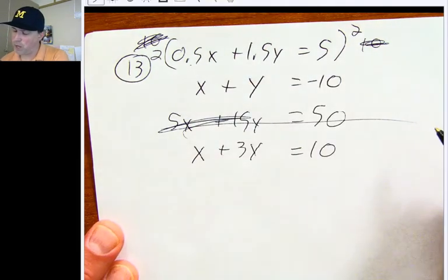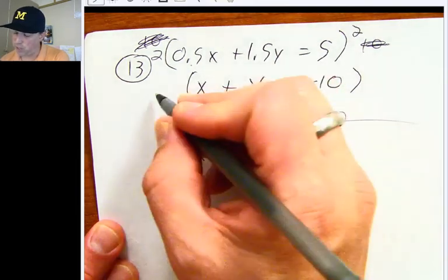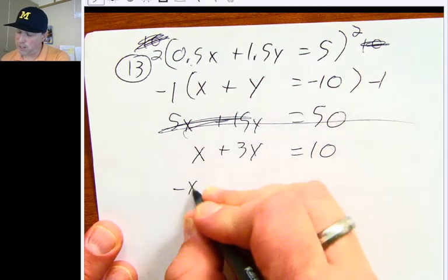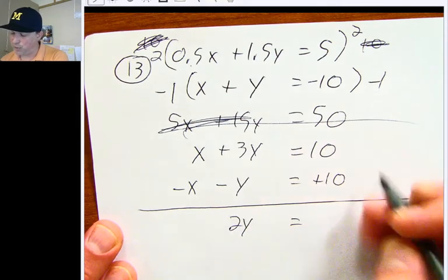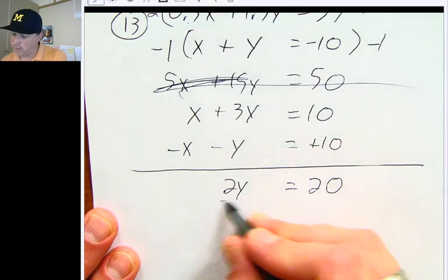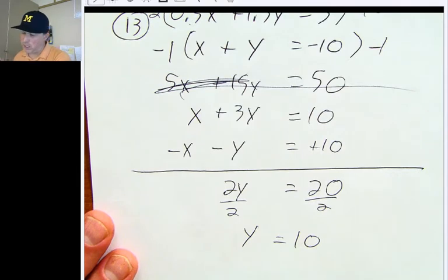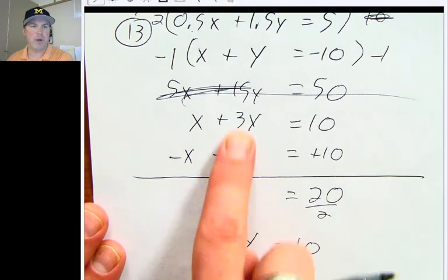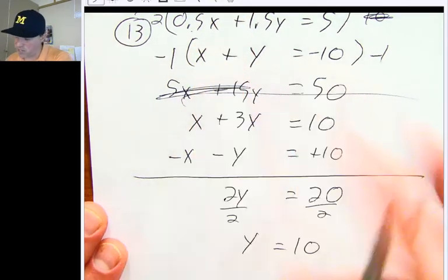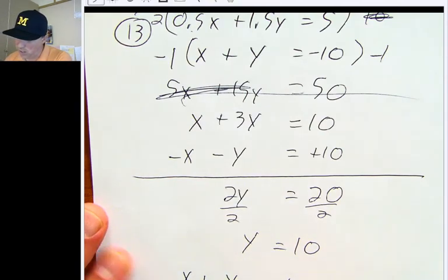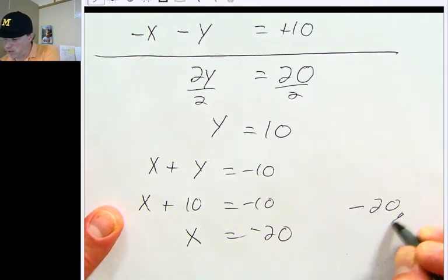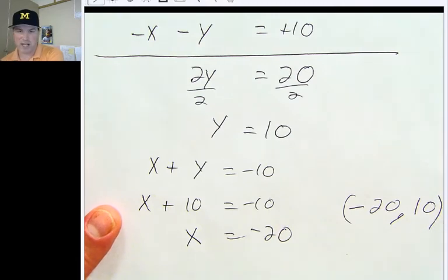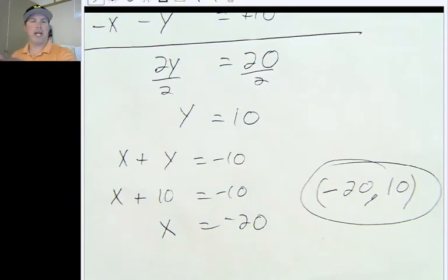This looks to me to be tailor-made for elimination. I like to use addition when I do my elimination. I'd multiply the second equation by negative 1, which would make it negative x minus y equals positive 10. When I add the two equations together, on the left side, I get a 2y. On the right side, I get a 20. Divide both sides by 2, y equals 10. You can plug it into any one of these equations. x plus y equals negative 10, change the y to a 10. x plus 10 equals negative 10. When you subtract 10 from both sides, you get negative 20 as your answer.